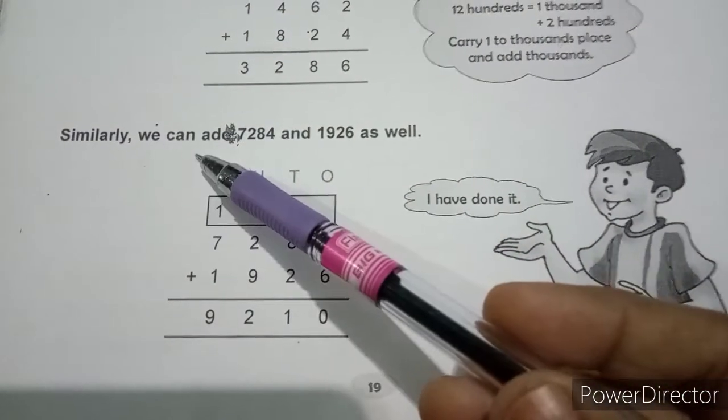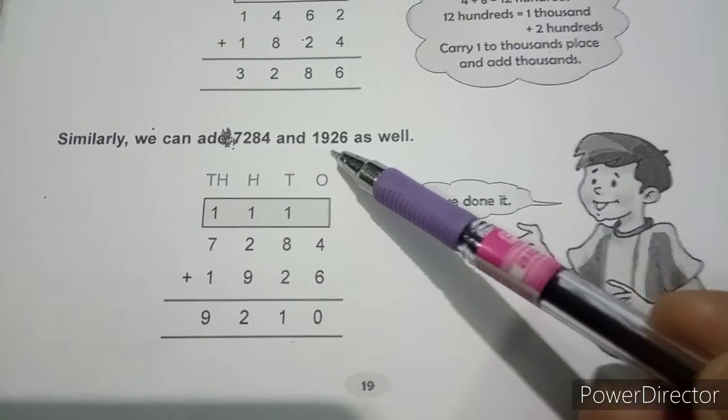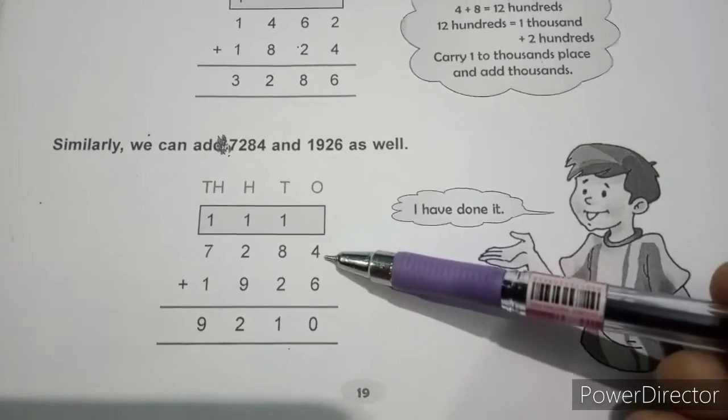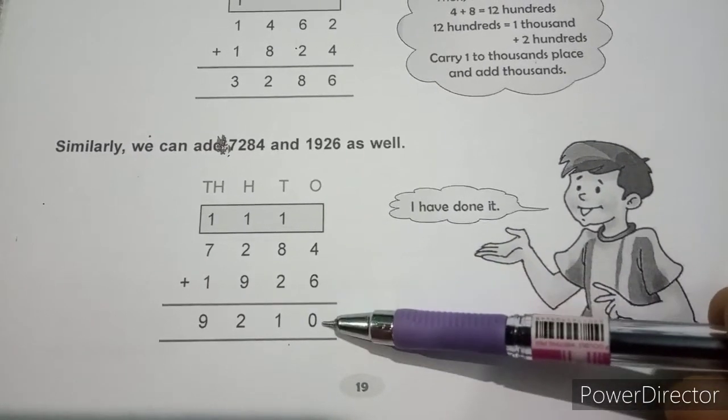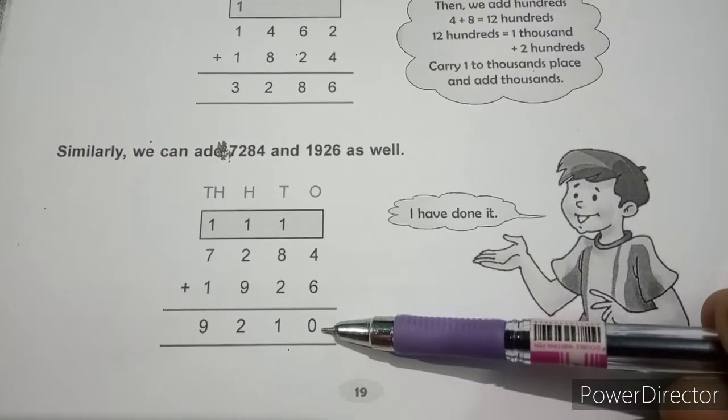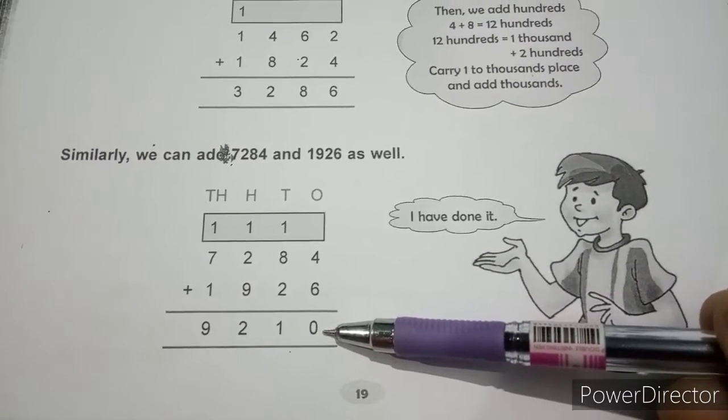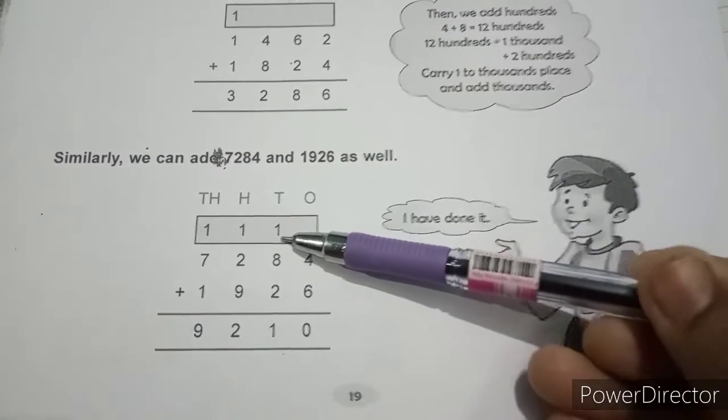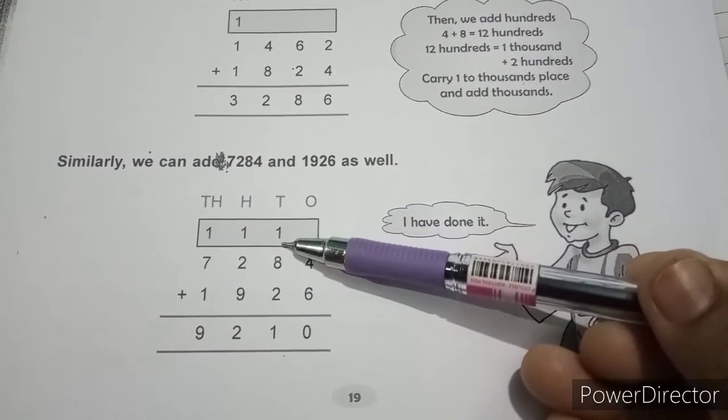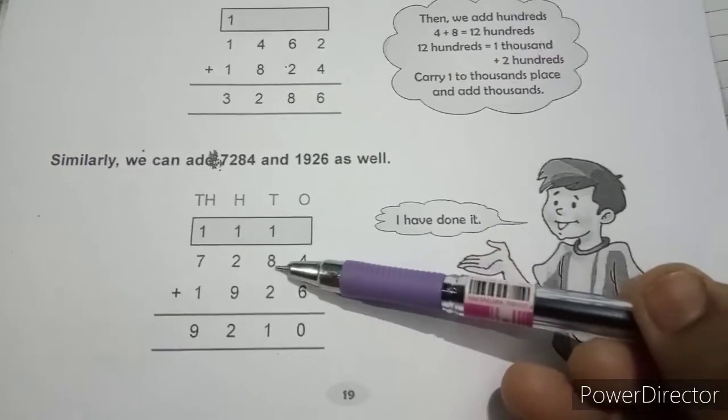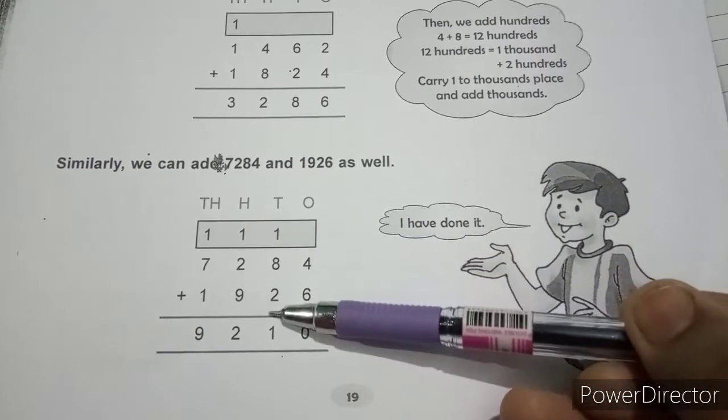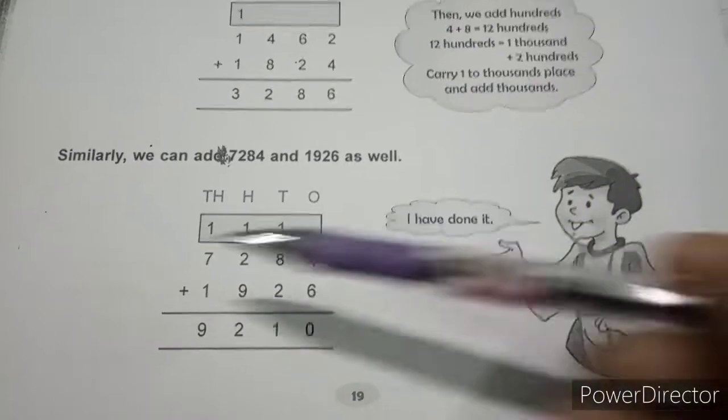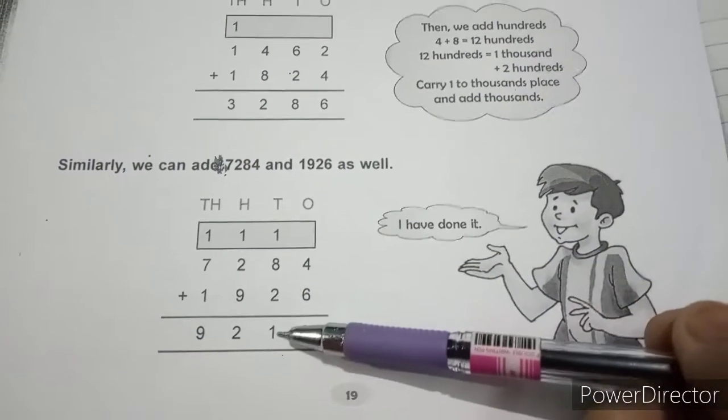Similarly, we can add 7284 and 1926 as well. Now, what is happening here? 4 plus 6 is equal to 10. We need to go to the place of tens. So here we have 0, we have 1 in tens. 1 in tens plus 8 plus 2 is 11 in tens. 11 in tens means that it is 100 plus 10. So we have carried it here.